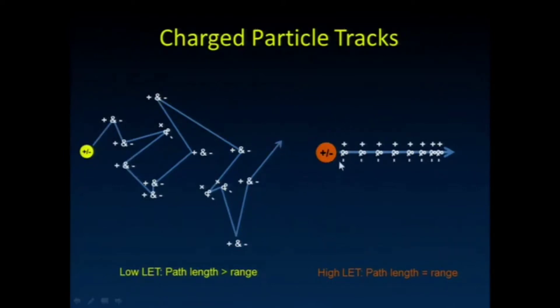While high LET radiation, really its path length and its range are about the same. It's that Mack truck when it starts to hit cars on the highway. They all move out of its way. It continues on its path, if you will.